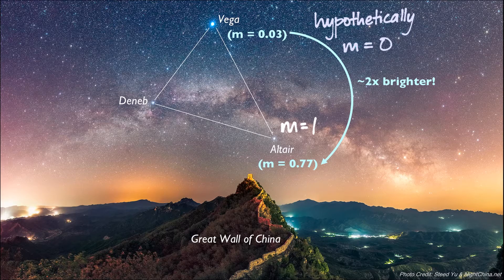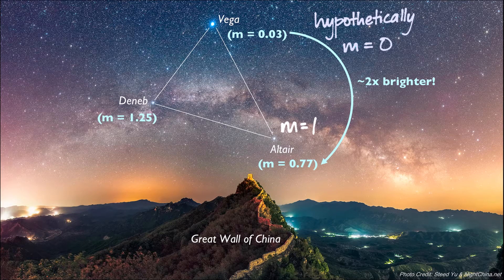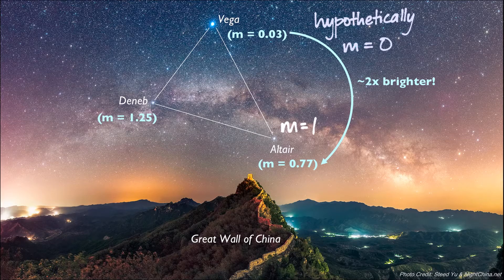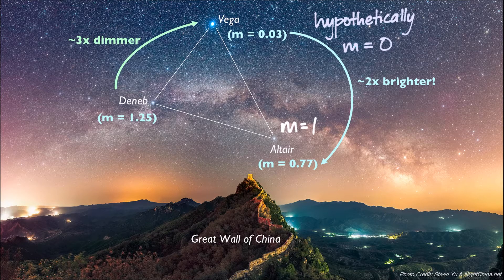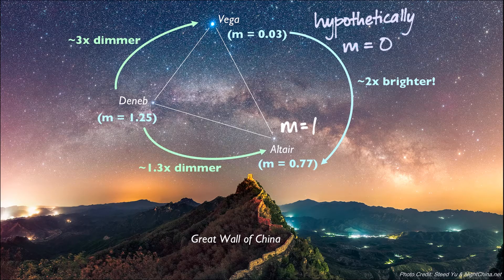With Deneb being the dimmest of these three stars, with an apparent magnitude of 1.25, it is actually just about 3 times dimmer than Vega, and almost 1.3 times dimmer than Altair.